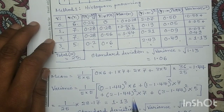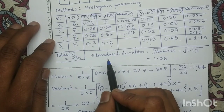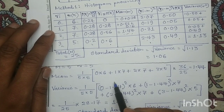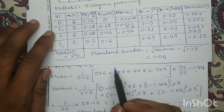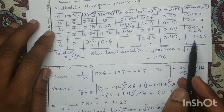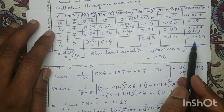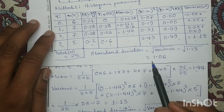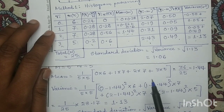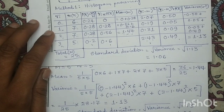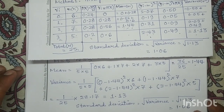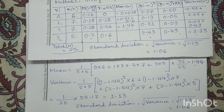So by applying method one — histogram processing — or method two — the classical approach — the values of mean, variance, and standard deviation are the same in both cases. Thank you.